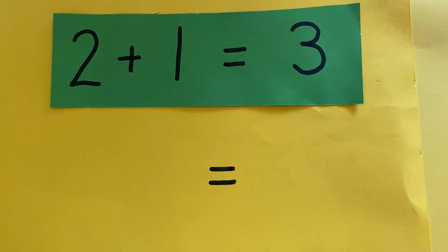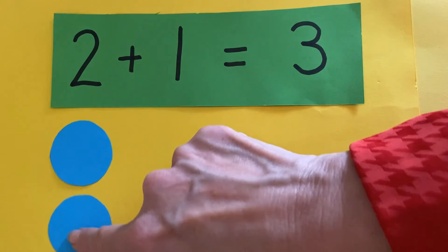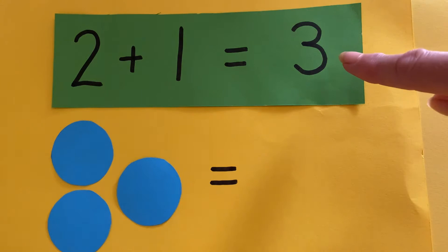First number is two. So I'm going to use two counters. One. Two. Next number is one. One.